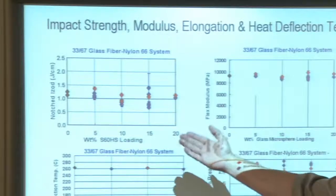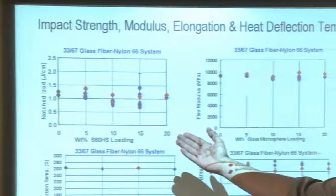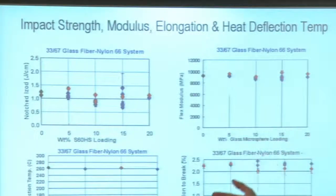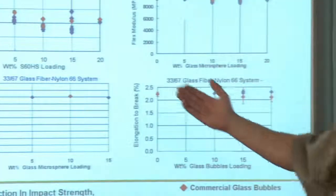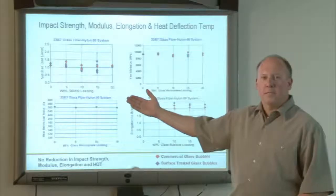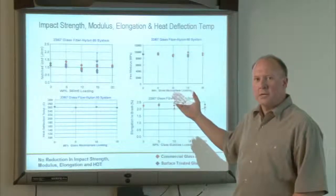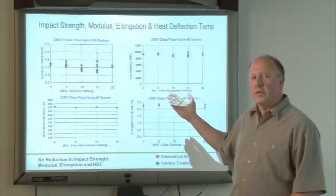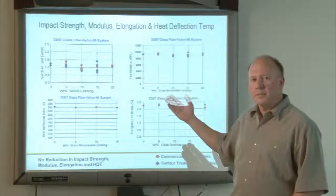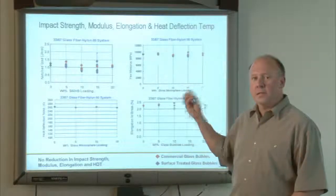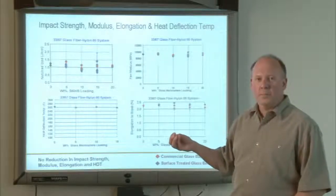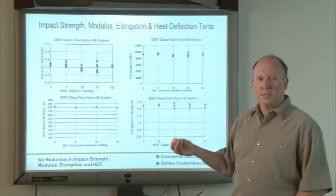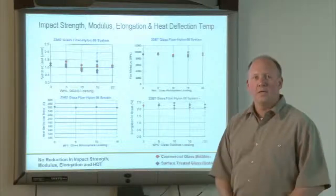As you can see in all of these cases — impact, flex modulus, distortion temperature, and elongation at break — the property does not change with the higher and higher level of glass bubble volume in these composites. So you can achieve light weighting and maintain the physical properties of this composite for structural, under-the-hood, and other types of applications.